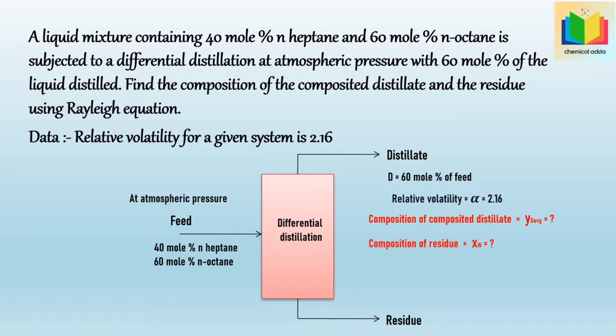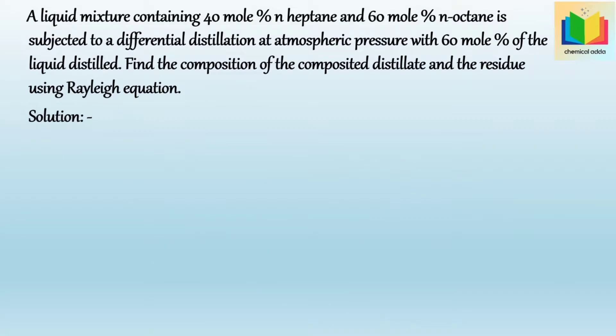A liquid mixture containing 40 mol percent N-heptane and 60 mol percent N-octane is subjected to a differential distillation at atmospheric pressure with 60 mol percent of liquid distilled. Find the composition of the composited distillate and the residue using the Rayleigh equation. Given data: the relative volatility for the given system is 2.16. We have to calculate Y_D average, that is the distillate composition, and X_W, that is the residue composition.